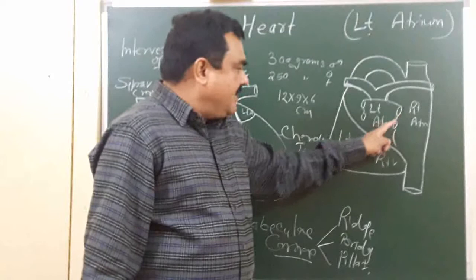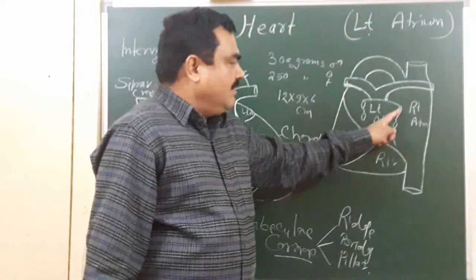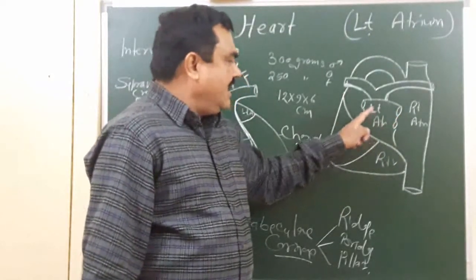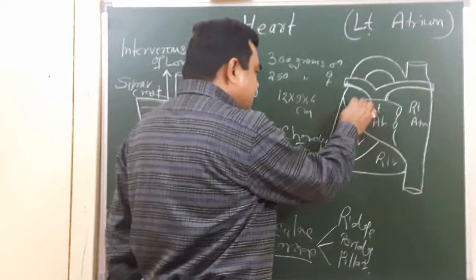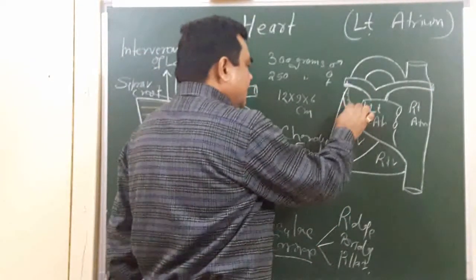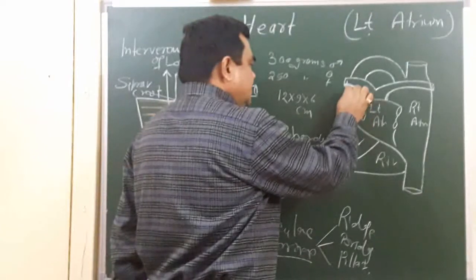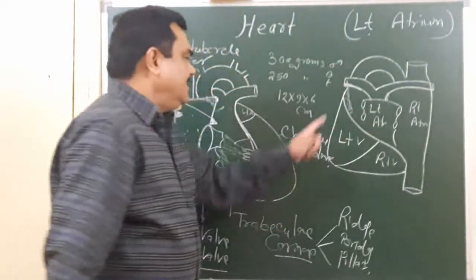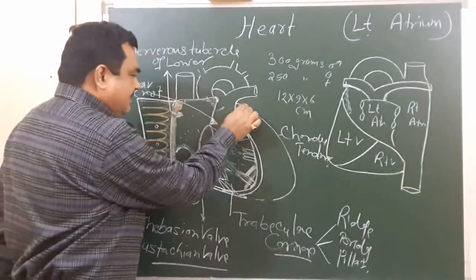There are four openings of the pulmonary veins which open into the left atrium. It has a small extension known as the left auricle. This left auricle is present here.